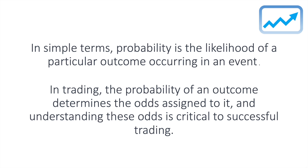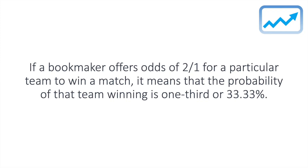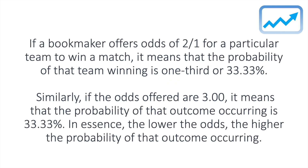In sports trading, the odds of an event are usually expressed in fractional or decimal formats. For example, if a bookmaker offers odds of 2 to 1 for a particular team to win a match, it means that the probability of that team winning is one third or 33.33 percent. Similarly, if the odds offered are 3.0, it means that the probability of that outcome occurring is also 33.33 percent. The lower the odds, the higher the probability of the outcome occurring.